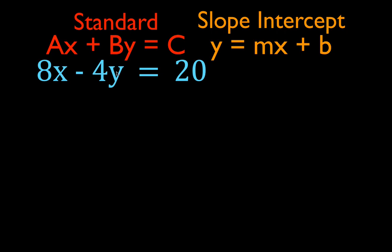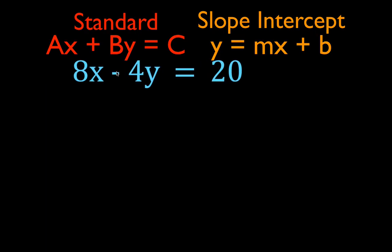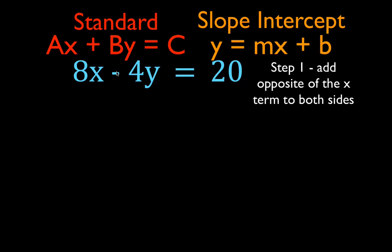In order to do this, we are going to follow two pretty simple steps. The first step is: you always add the opposite of the x-term to both sides. This is the x-term, 8x. The opposite of 8x is minus 8x. I am going to add minus 8x to both sides.